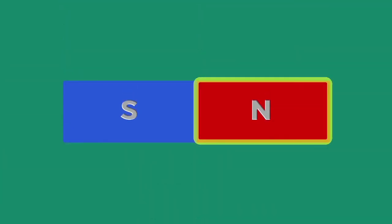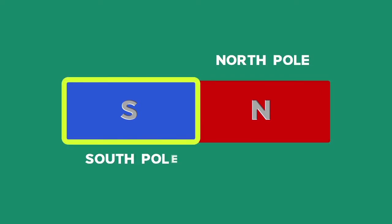Remember that the red end of the magnet is the North Pole and the blue end is the South Pole.